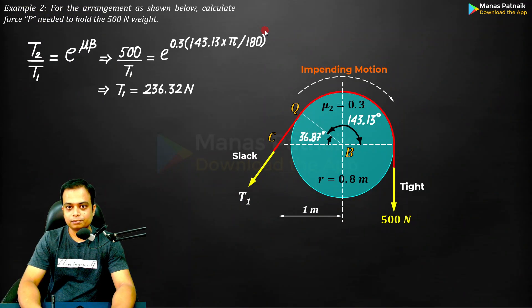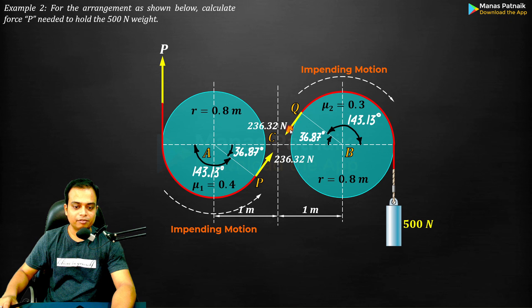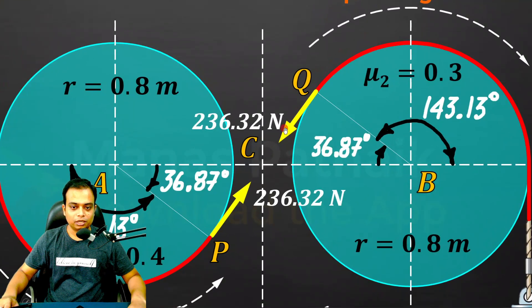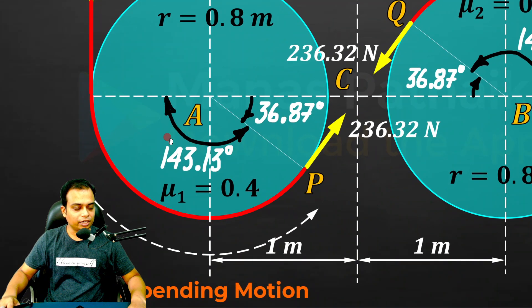Let me update the figure: T1 is 236.32. Let me update it in the main figure. If this is 236.32, this also has to be 236.32.